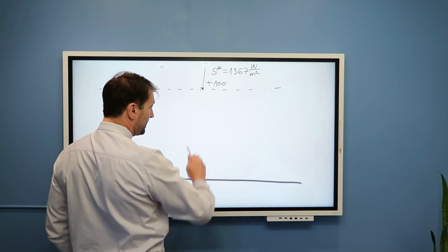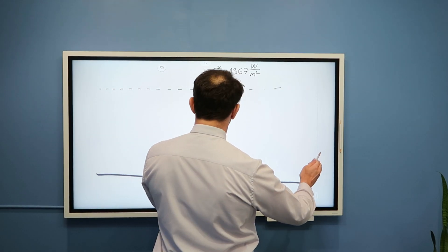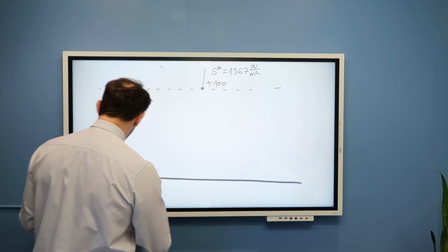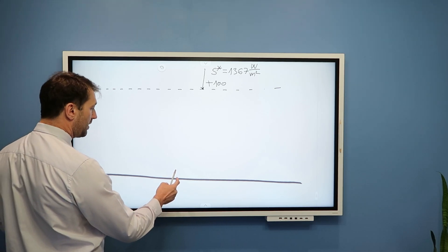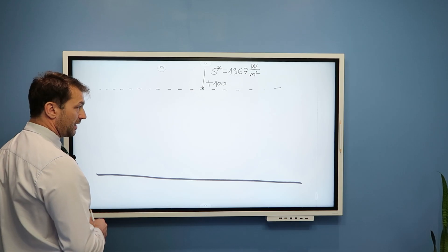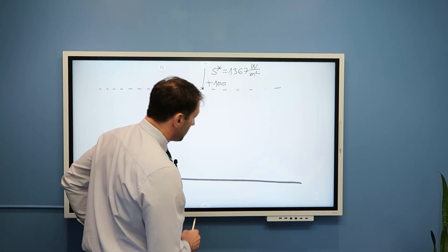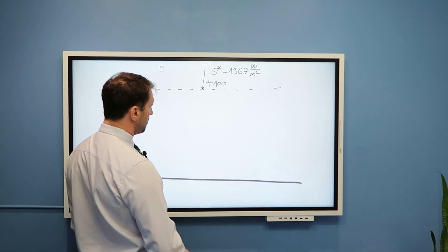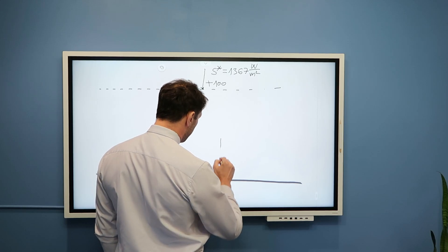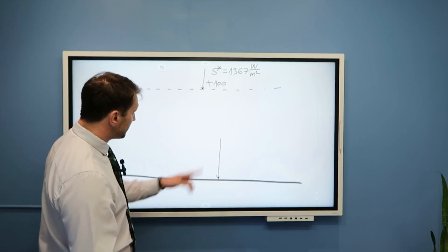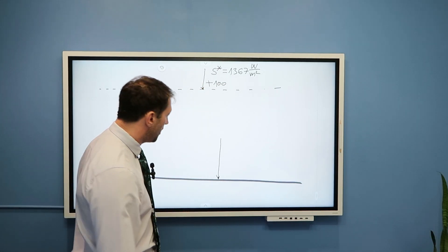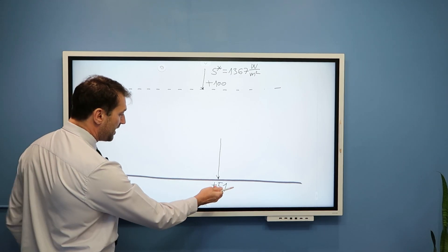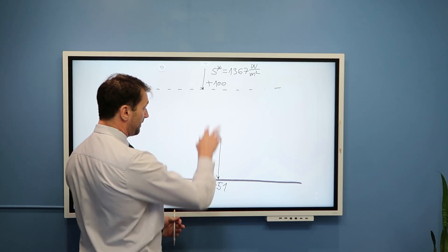Let's look into the right part of this figure when we talk about energy that the surface receives, and the left part when we talk about the amount of energy that the surface loses. First, the surface gains energy from solar radiation. From the previous video, I showed that the amount of energy the Earth's surface receives through direct and diffuse solar radiation is equal to plus 51 units, absorbed by the Earth's surface.